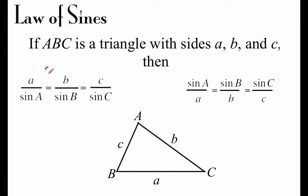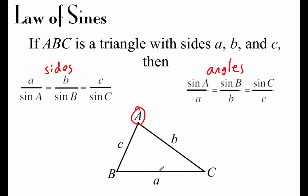I like to use the left-hand form when trying to find one of the sides of our triangle, because it has those sides on top, making the math a little bit easier. For finding angles, I like to use the right-hand form since the angle information is on top of the fractions. Notice that angle A is directly across from side a, angle B across from side b, and angle C across from side c.